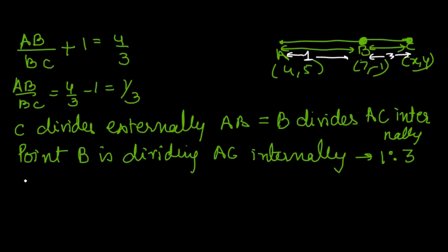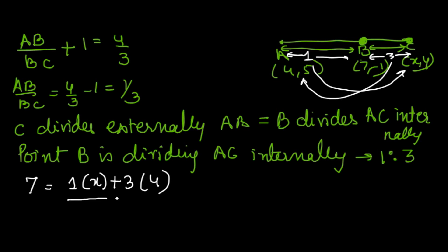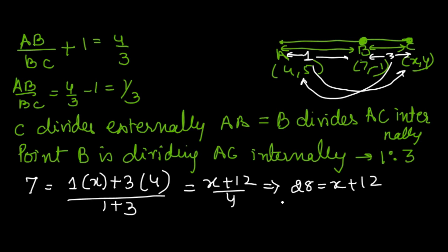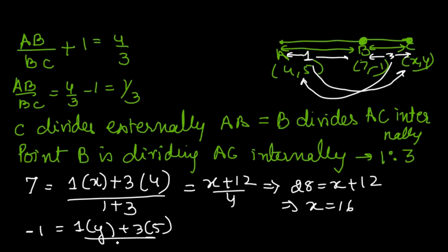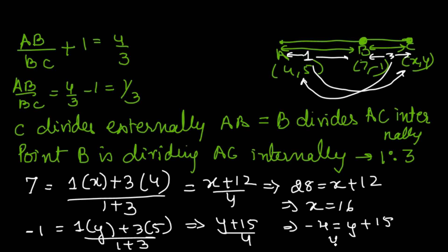Applying the section formula with ratio 1:3, the x-coordinate of B is 7 = (1·x + 3·4)/(1+3) = (x + 12)/4. So 28 = x + 12, giving x = 16. For the y-coordinate: −1 = (1·y + 3·5)/(1+3) = (y + 15)/4, so −4 = y + 15, giving y = −19.